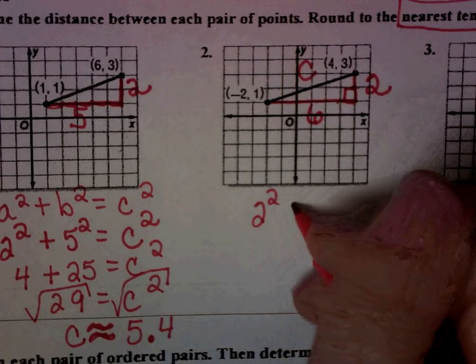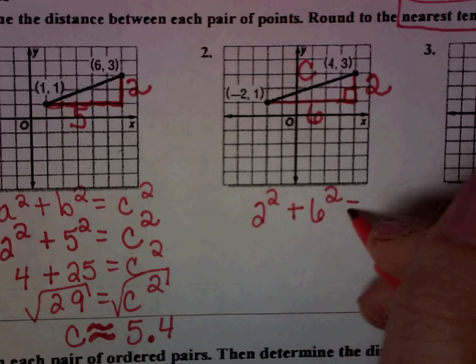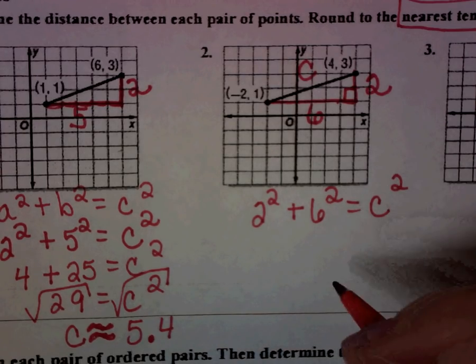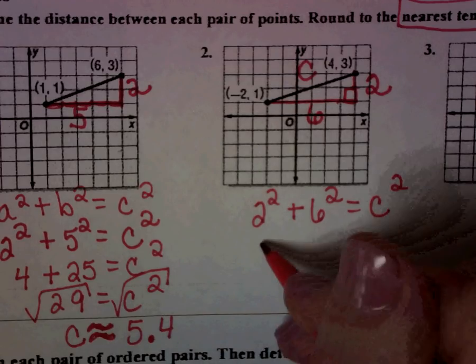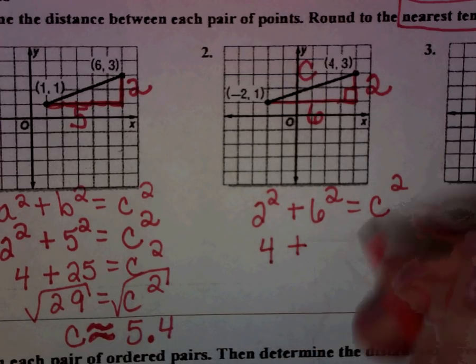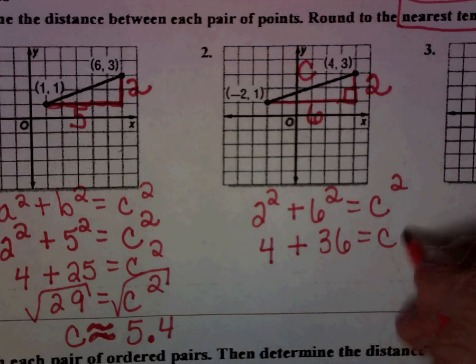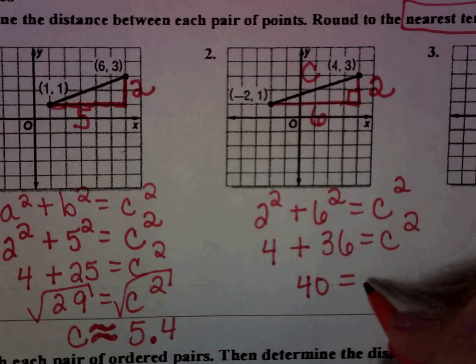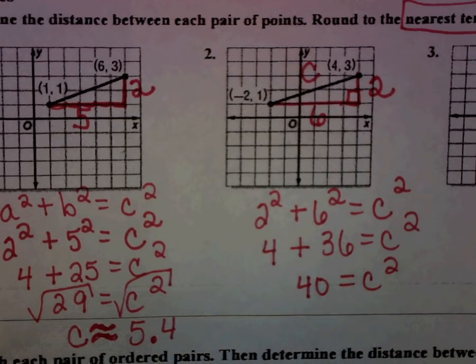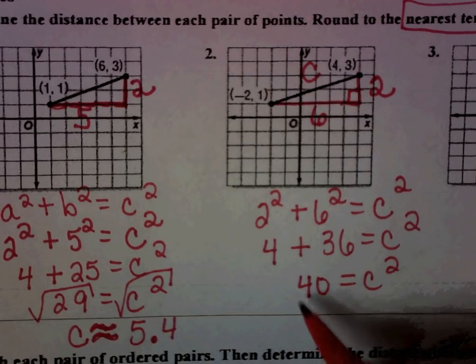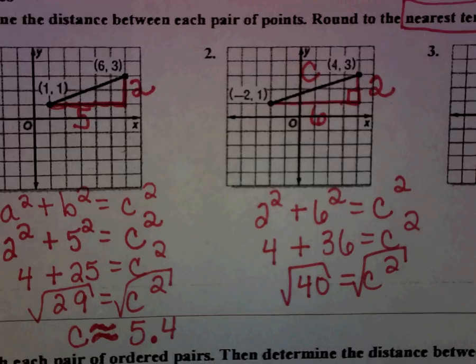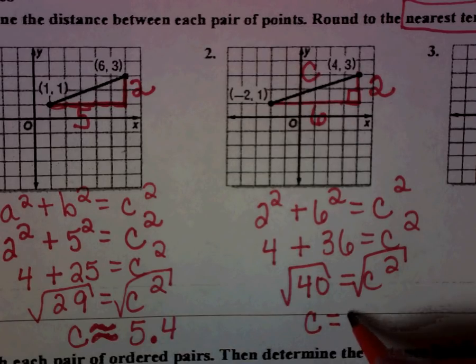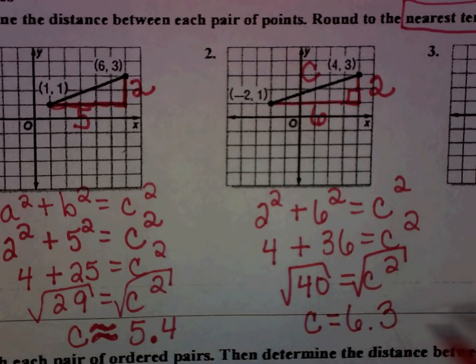So 2 squared plus 6 squared equals C squared. And you should be able to solve it from there. You should know what to do. 2 squared is 4. 6 squared is 36. 4 plus 36 is 40. And then remember, our last step, if we're looking for a side length, is to take the square root. When you plug in the square root of 40, if you round it to the nearest tenths place, you should get 6.3.